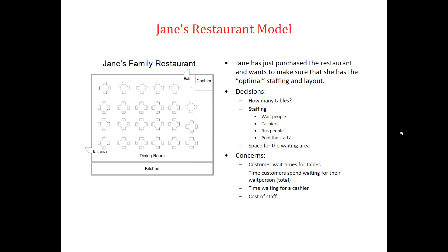Now let's get to the description of the restaurant we're considering in this video. The restaurant consists of a dining area. When customers arrive, they first wait to be seated. If a table is available, they are seated right away. Otherwise, if all of the tables are occupied, the customers wait for a table to become available.